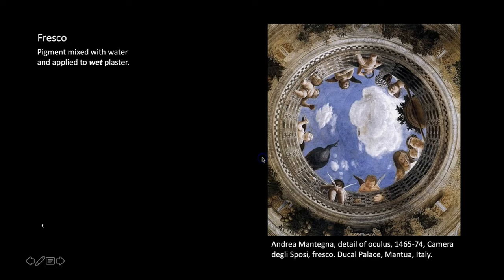Now we're going to move on to fresco. Fresco has also been around since ancient times, but it really had a resurgence in the early Renaissance and through the Renaissance with painters. In fresco, the viscous material is water — you mix your pigment with water — but it has a very specific and involved process.